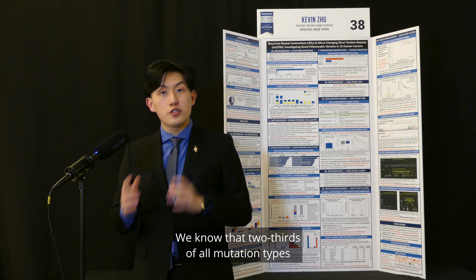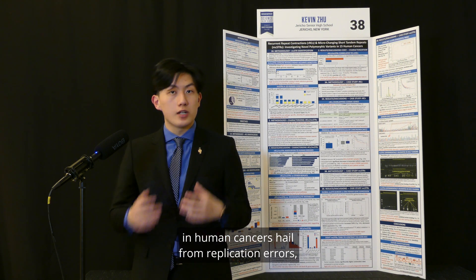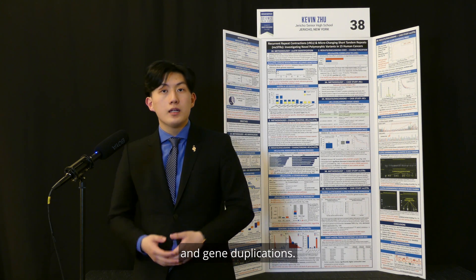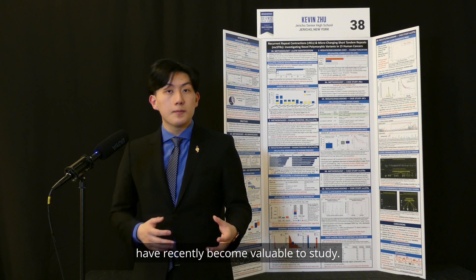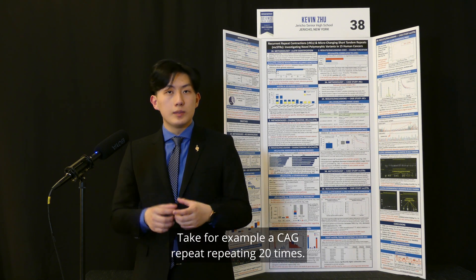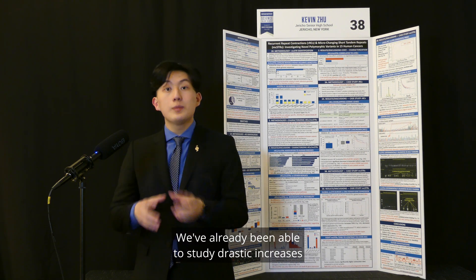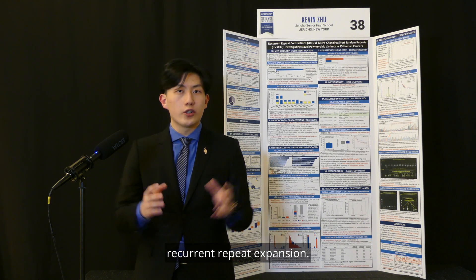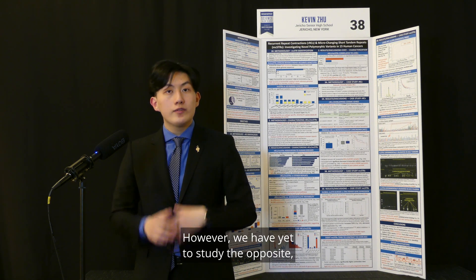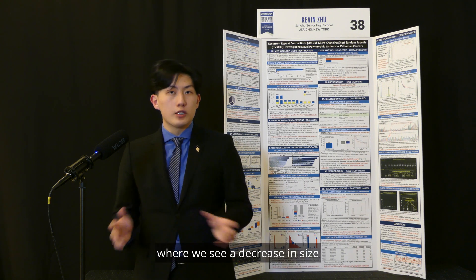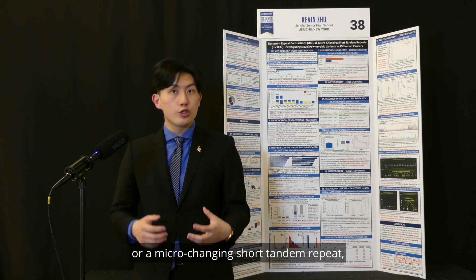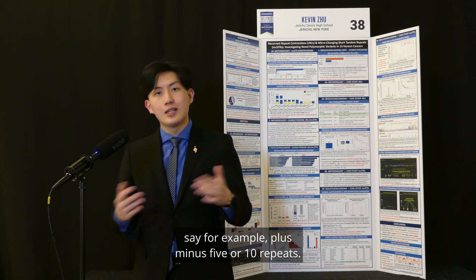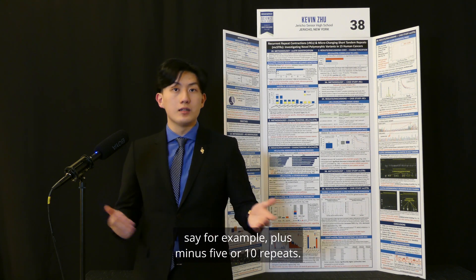We know that two-thirds of all mutation types in human cancers hail from replication errors, which include chromosomal amplifications and gene duplications. A subset, tandem repeats, have recently become valuable to study. Take for example a CEG repeat repeating 20 times. We've already been able to study drastic increases upon its expected tandem repeat size, called a recurrent repeat expansion. However, we have yet to study the opposite — a recurrent repeat contraction, where we see a decrease in size, or a microchanging short tandem repeat, which is a smaller variation upon an expected tandem repeat size, say plus or minus 5 or 10 repeats.